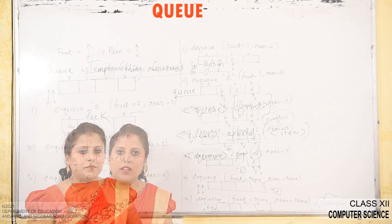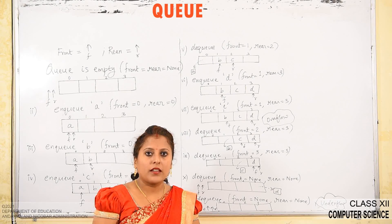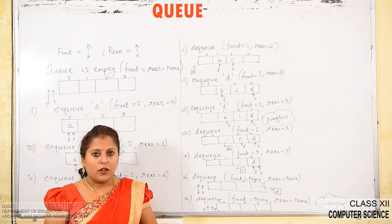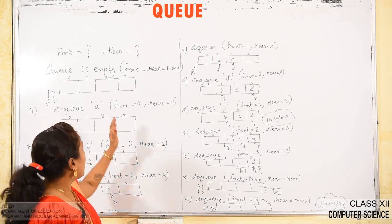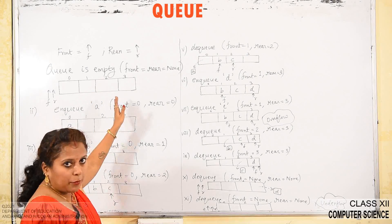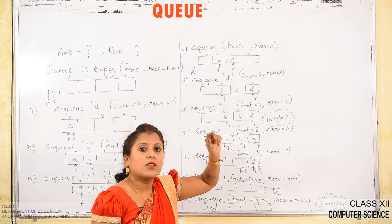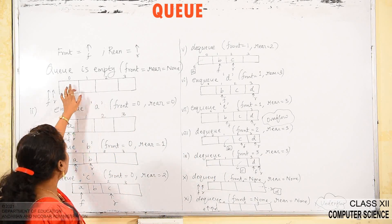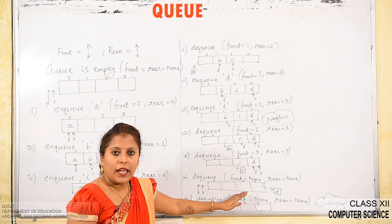Let's see an example where the capacity of the queue is 4 — a bounded queue. Total 4 elements can be stored. Index starts from 0 and goes till size minus 1, that is 3. We will show how insertion and deletion work and how front and rear positions change with each operation.